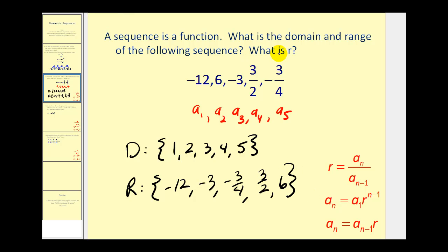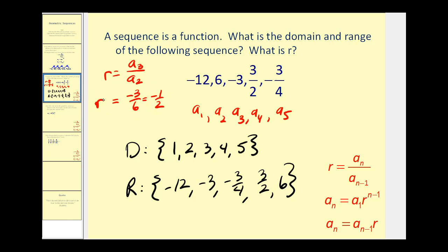They also want us to find the common ratio r. So what we can do is select any term in the sequence and divide by the term before it. Let's use a sub three divided by a sub two: negative three divided by six is equal to negative one half. So our common ratio is negative one half.